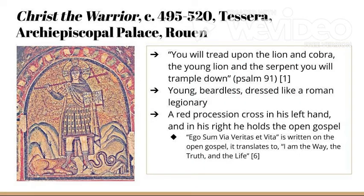Christ the Warrior, circa 495–520 A.D., Tissera, Archaeopistopal Palace, Rome. Here, Christ is depicted as young, beardless, and dressed like a Roman legionary. A red procession cross is held in his left hand; in his right hand, he holds the open gospel. This piece depicts a much younger Jesus Christ dressed like a Roman soldier. Jesus' faith in God is comparable to invincible armor. The religious iconography represents the divine protection of God, as well as trust in that protection. Jesus is depicted as the defeater of all evil, under divine protection from the ultimate God.